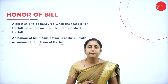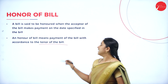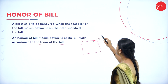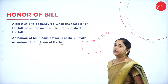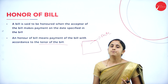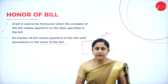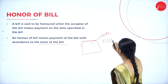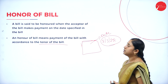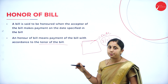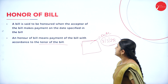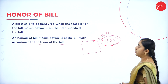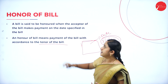Honor of bill means payment of the bill in accordance with the tenor of the bill. At the time of purchase, the person doesn't have money to pay, so he takes some time. At that time, they give the bill for payment, mentioning a date — for example, two months' time. If the bill date is 2nd March 2022, then the acceptor of the bill makes the payment on that mentioned date, which is considered as honor of bill.